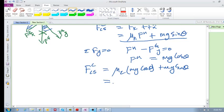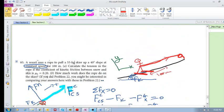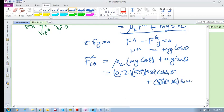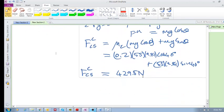What was the value of mu_k? 0.2, 55, 40 degrees. So this would become 0.2 times 55 times 9.81 times cos of 40 plus 55 times 9.81 sin of 40, and the answer to this was what I calculated is 429.5 newton. So this is the tension in that cable that's pulling the person up, almost 430 newton, pulling them up.